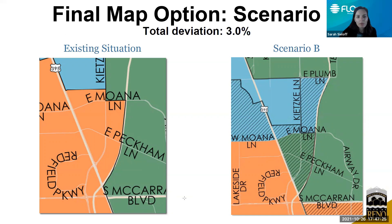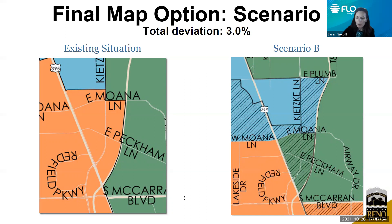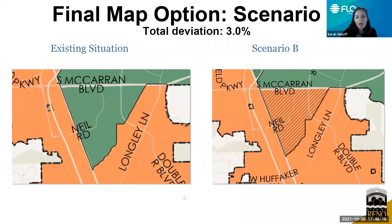Similar but not identical to Scenario A, there is a piece of Ward 2 bounded by East Moana Lane, north of McCarran, with parts moving to Ward 3 in green. The southern portion just north of McCarran uses US-395 as the western boundary and East Moana Lane as the northern boundary — that area moves from orange to green into Ward 3. Additionally, there are changes from Ward 2 to Ward 1, north of West and East Moana Lane, with East Plumb Lane as the northern boundary.